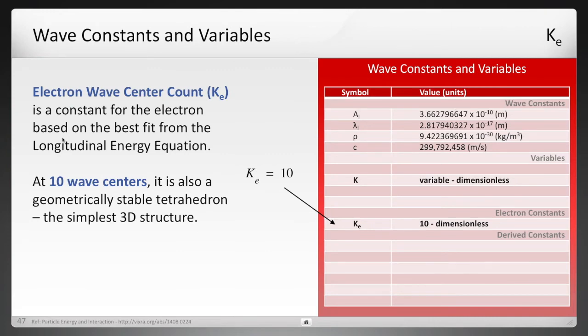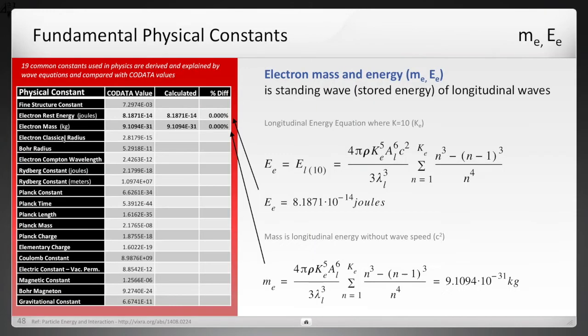This is the value K. It's a red slide, so I will move on. This is also a red slide, but here you'll see the mass and energy of the electron was calculated to be the exact known CODATA values.